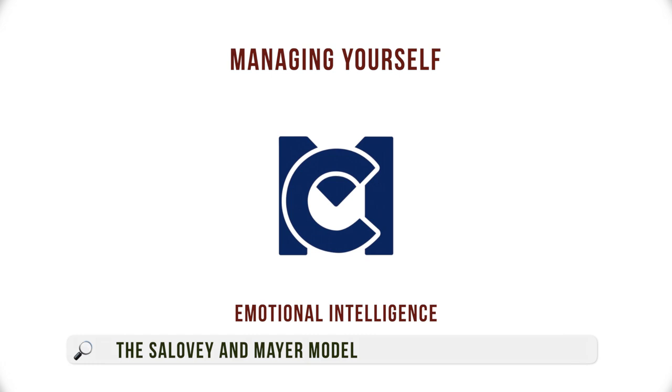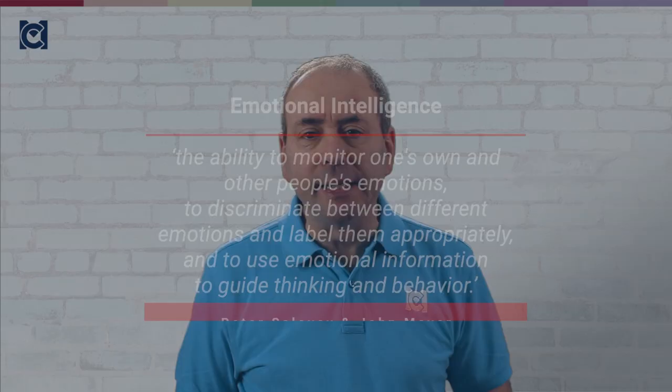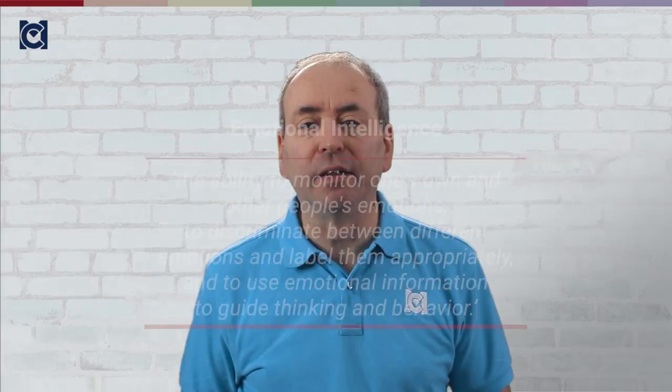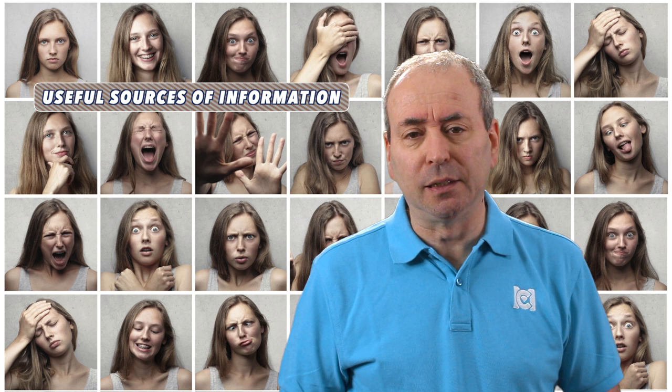Peter Salovey and John Mayer developed a model of emotional intelligence based on four abilities. These focus on how you process emotional information and how you use it to navigate your social environment. Salovey and Mayer offer us a number of definitions of emotional intelligence. My favourite defines it as the ability to monitor one's own and other people's emotions, to discriminate between different emotions and label them appropriately, and to use emotional information to guide thinking and behaviour. They see emotions as useful sources of information to help us understand and navigate a social arena.